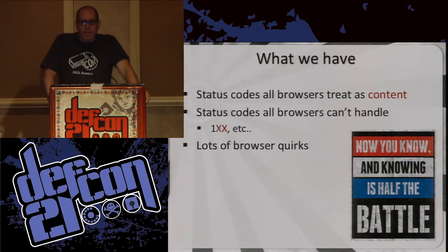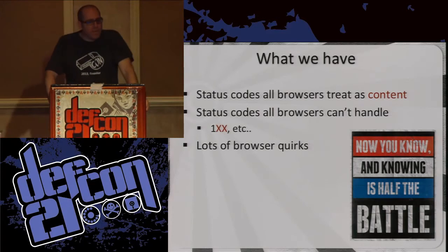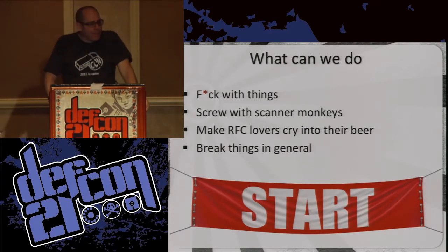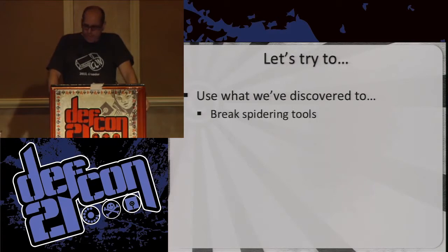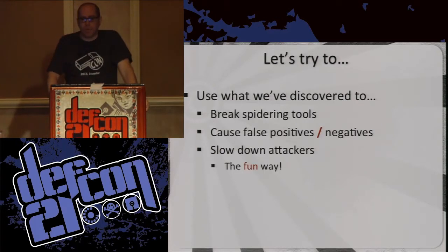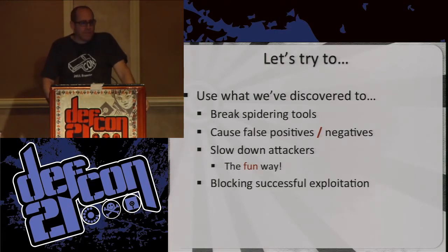So let's bring all this stuff together. We've got status codes that are treated like content, status codes that aren't well handled — specifically the 100 codes — and lots of little browser quirks we can abuse. What can we do? We can break spidering tools, cause false positives and false negatives, slow down attackers — which is probably one of the most important things — giving us time to respond to how people are attacking us. And then block successful exploitation: even if they exploit the server, if you're responding with different codes, maybe their exploit won't work.